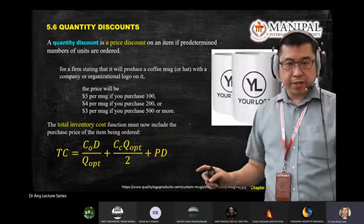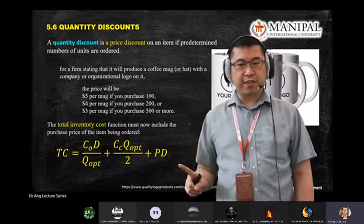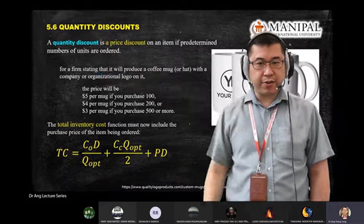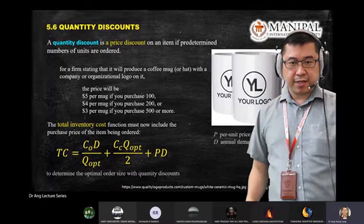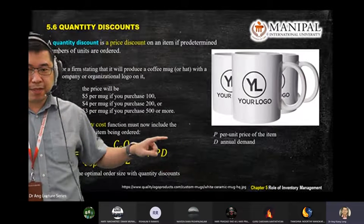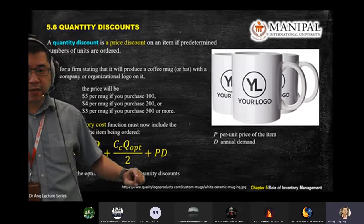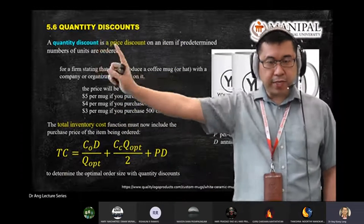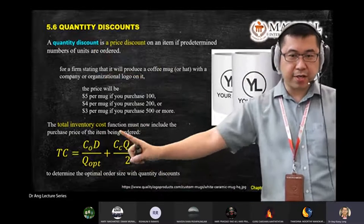So here's another formula — the fifth equation for today — to calculate total inventory costs under the quantity discount scenario. The first two components are the same as before, but you add one more component: P multiplied by D. P is the price per unit item, D is your annual demand. Price multiplied by annual demand gives you the purchase cost for your orders.